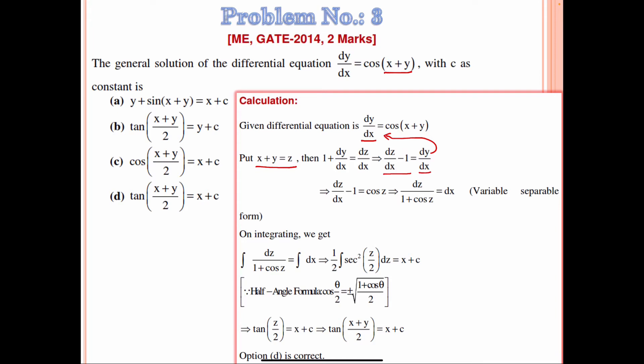Separating the variables gives dz / (1 + cos z) = dx, which is a variable separable form. Integrating both sides: integral of dz/(1 + cos z) = integral of dx. Using the half-angle formula, 1 + cos θ = 2cos²(θ/2), the left side becomes (1/2)sec²(z/2) dz.